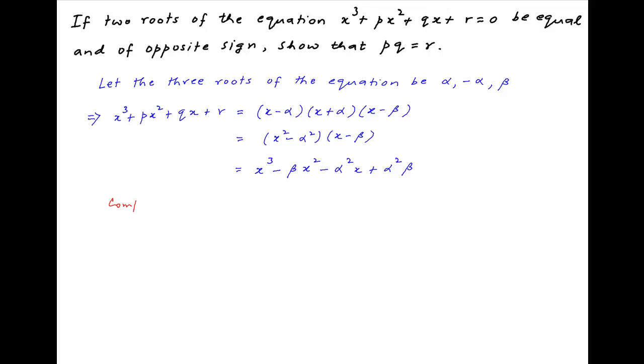Equating the coefficients of like terms across the left hand side and the right hand side, we have p is equal to minus beta, q is equal to minus alpha square, and r is equal to alpha square beta.